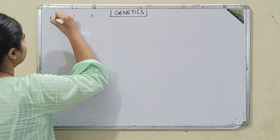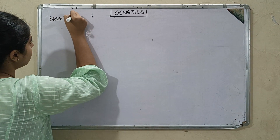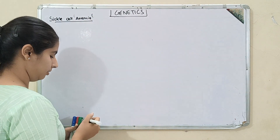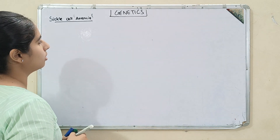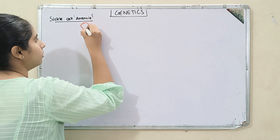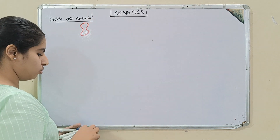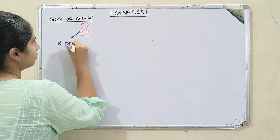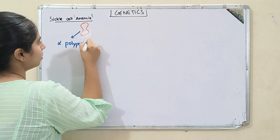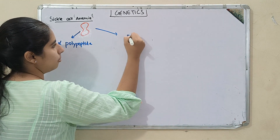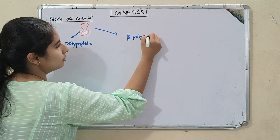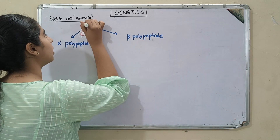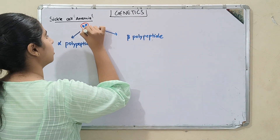Let's start with the next topic: sickle cell anemia — again very important. Hemoglobin has two alpha polypeptides and two beta polypeptides.